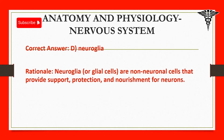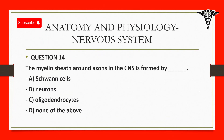Question 14: The myelin sheath around axons in the CNS is formed by: A. Schwann cells. B. Neurons. C. Oligodendrocytes. D. None of the above.